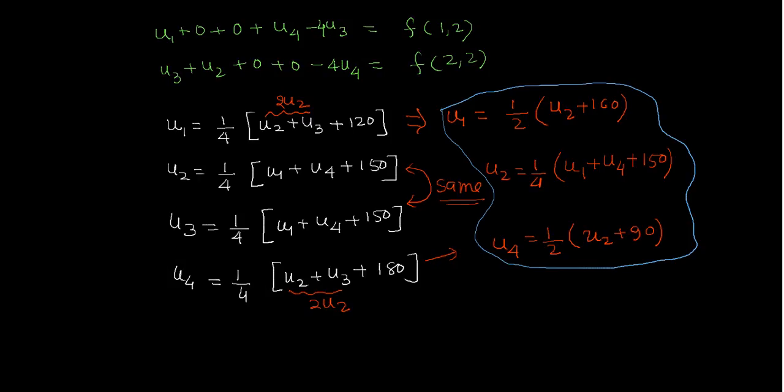So now we have a system of 3 by 3 equations that we can solve. So what is the system? Let me write the system. So the system will be the matrix: [2, -1, 0; -1, 4, -1; 0, -1, 2] times [u1; u2; u3] equals [60; 150; 90].